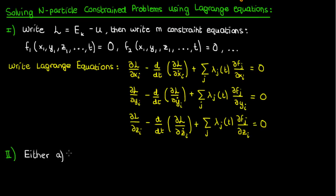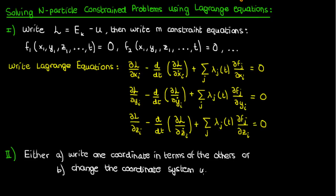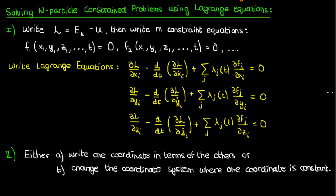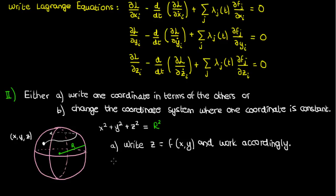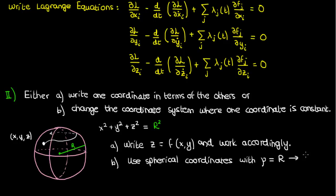As you can imagine, this technique is pretty cumbersome and it's used quite rarely. Another way to solve constrained mechanics problems is to either write one coordinate in terms of the others, or use a coordinate system where one of the coordinates is constant. As an example, let's go back to our particle on the sphere. We could write z as a function of x and y, and replace all the z's in the kinetic and potential energies accordingly. Alternatively, we could use spherical coordinates with the radius held constant at capital R, so that the only two coordinates we have to worry about are theta and phi — meaning the kinetic and potential energies will have to be written in spherical coordinates.